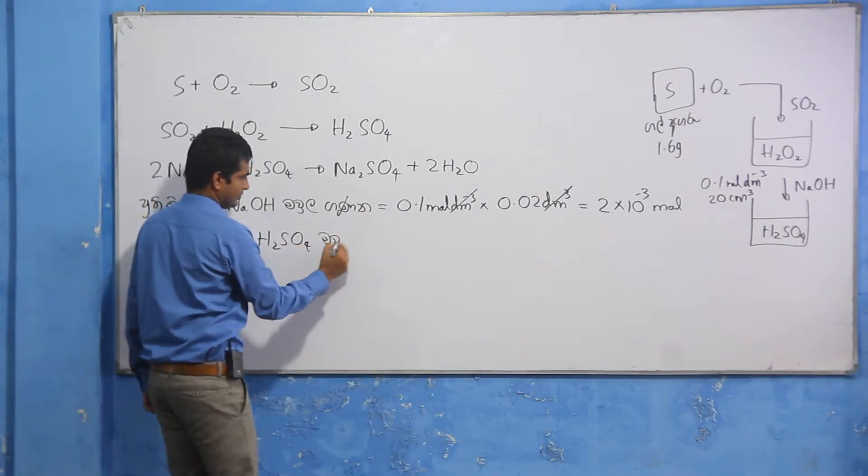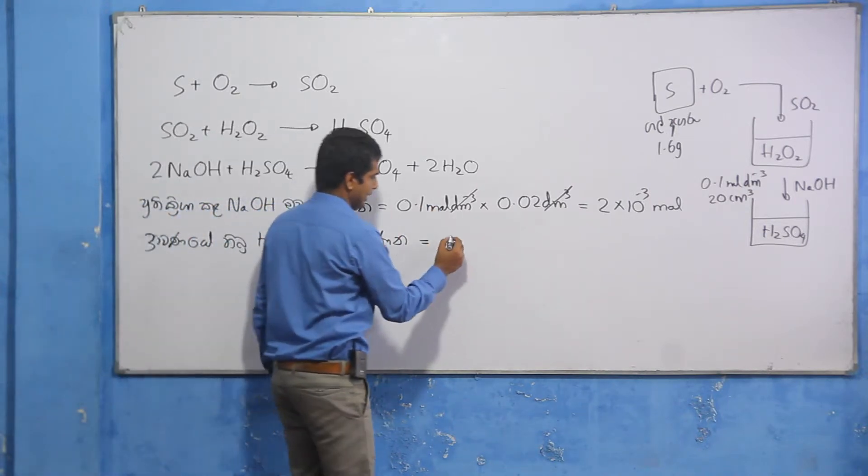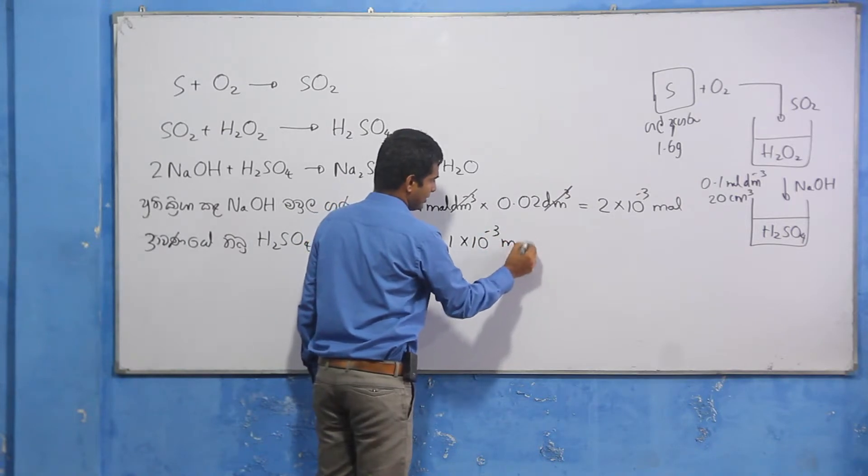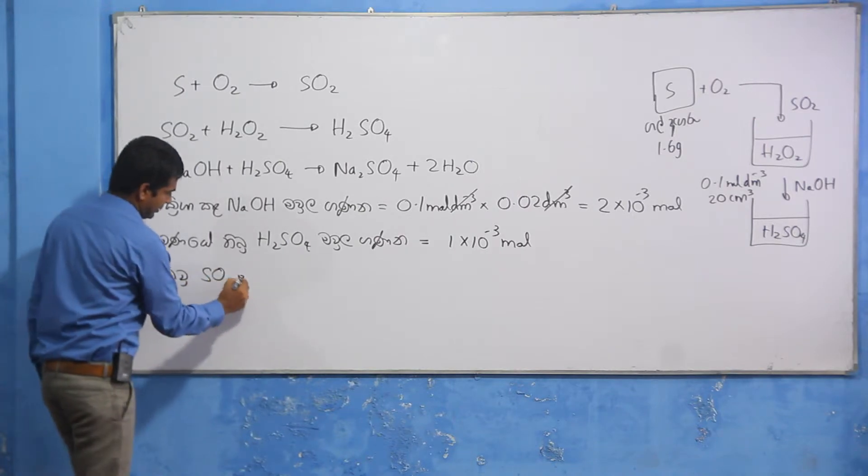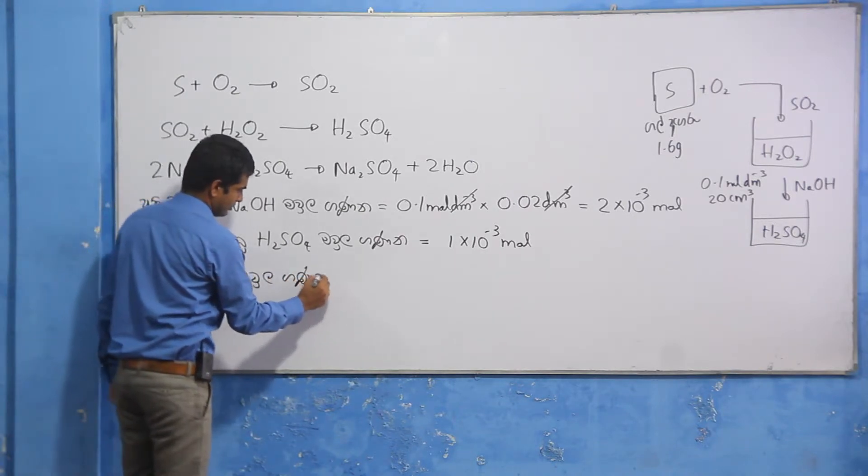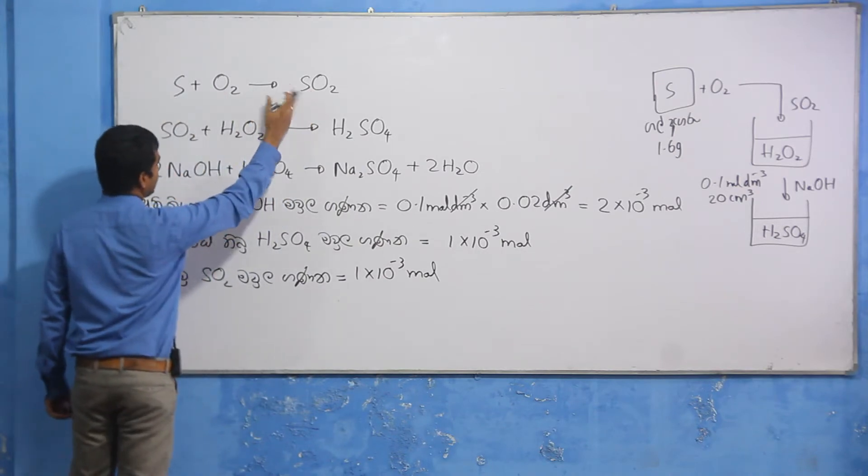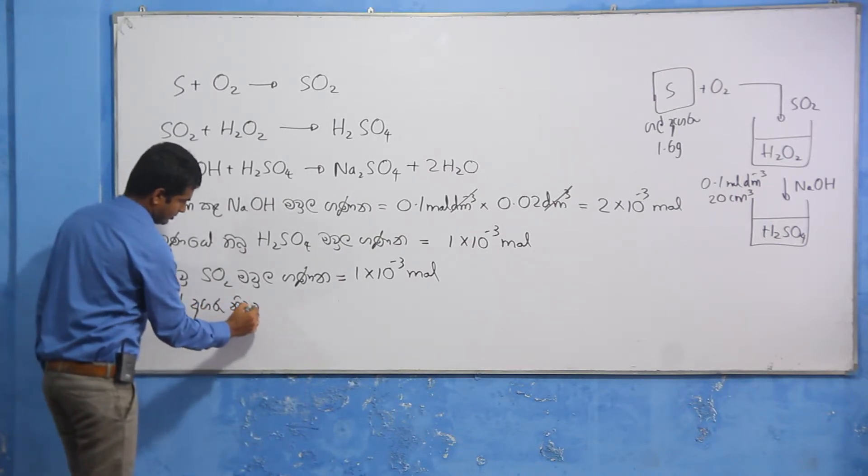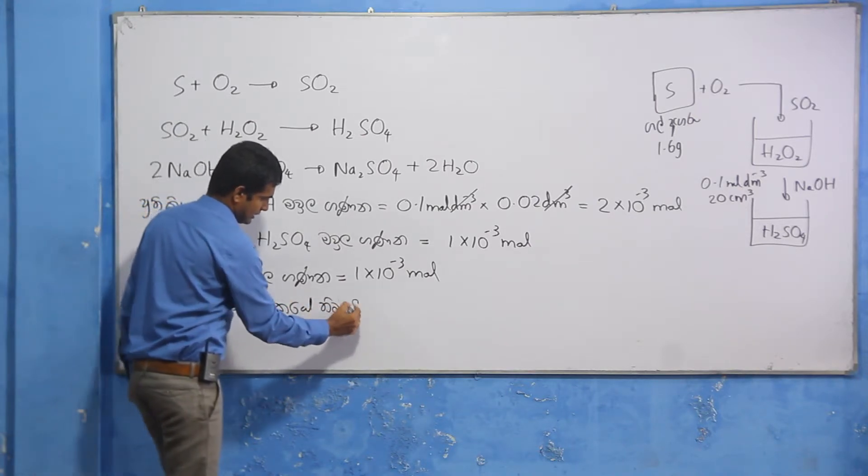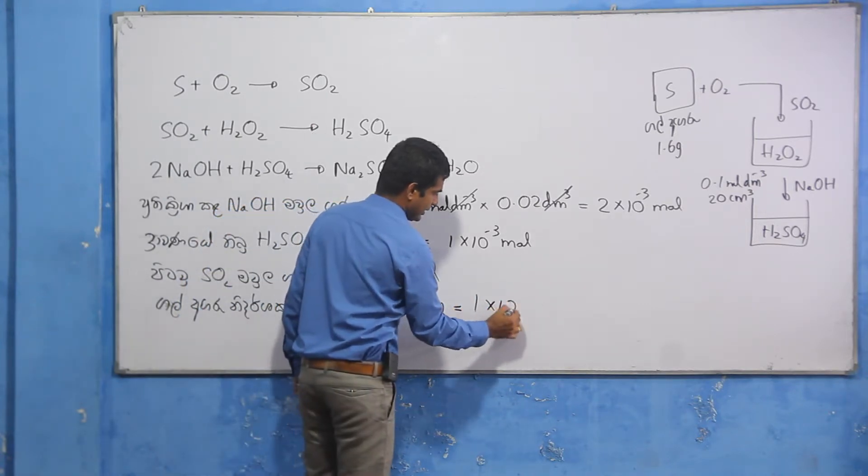For sulfuric acid molecules, one molecule participates in the reaction. For sulfur dioxide molecules, one molecule participates in the reaction. Sulfur dioxide has sulfur molecules. One participates. Let me show this calculation for sulfur molecules. One molecule participates in the reaction.